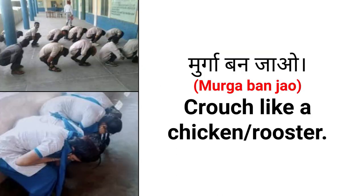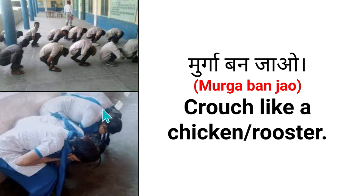Today's first sentence is: Murga banjao. How do we say 'Murga banjao' in English? We say: crouch like a chicken, or crouch like a rooster. 'Crouch' means to bend down like an animal — to squat low to the ground. And 'rooster' or 'chicken' means murga.